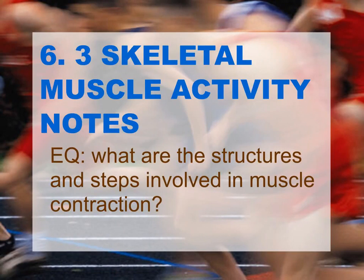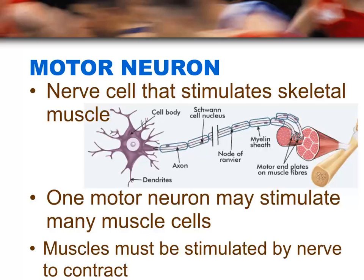This is 6.3 skeletal muscle activity notes. The essential question is: what are the structures and steps involved in muscle contraction? A motor neuron is a nerve cell that specifically controls skeletal muscles, and skeletal muscles are under voluntary control — that means you control it.